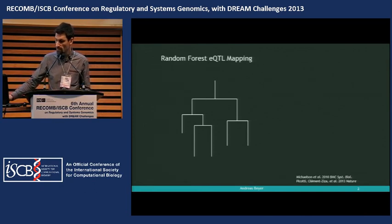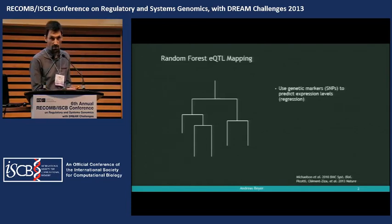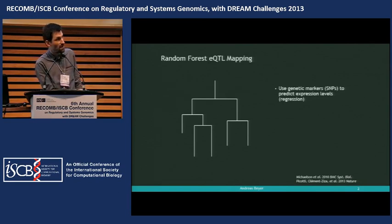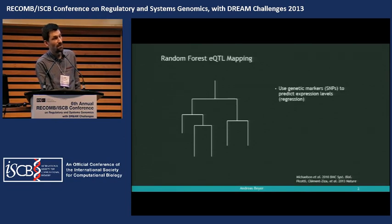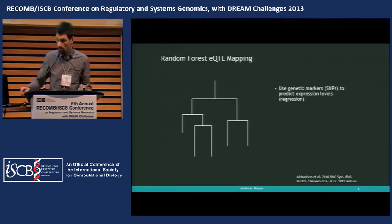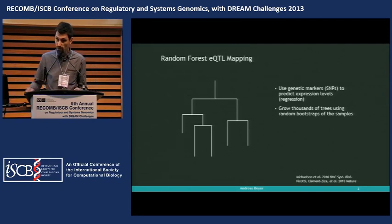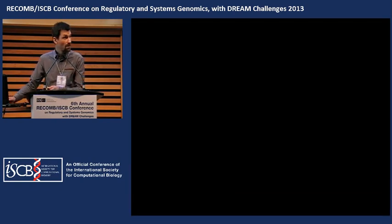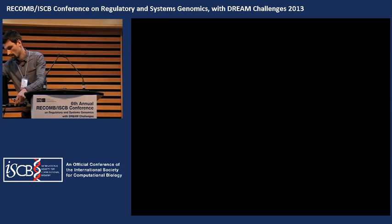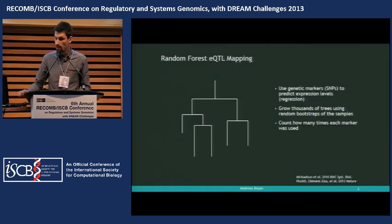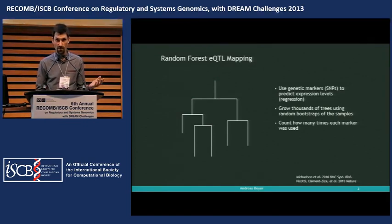You're learning regression trees, essentially. You use the genetic markers to explain, for instance, expression or whatever your trait is. That means you're using a marker to split your population into subpopulations that are more homogeneous with respect to the trait. Then you can use other markers to split your population more and more. In the end, what's important is that you're growing thousands of these decision trees, which gives you more stable results. We then use the number of times that a marker was used in this forest as an indicator of how important that marker is for your trait.